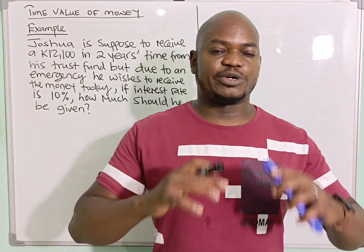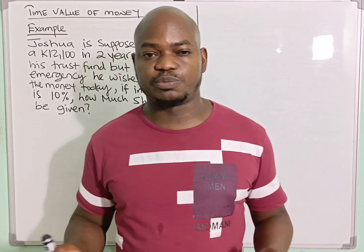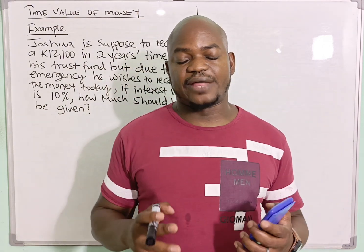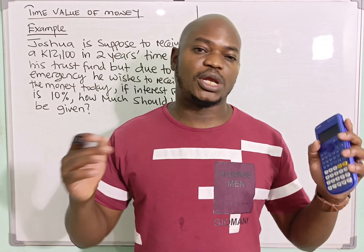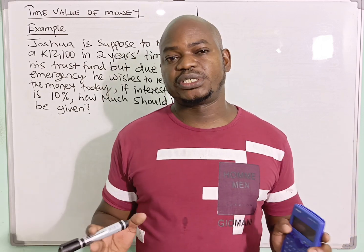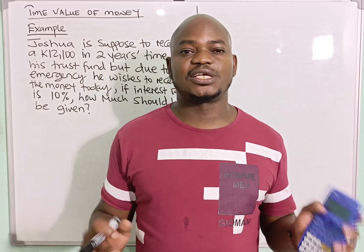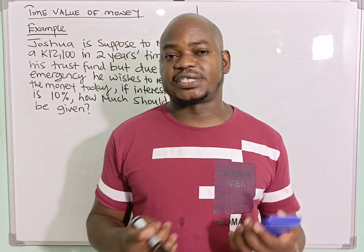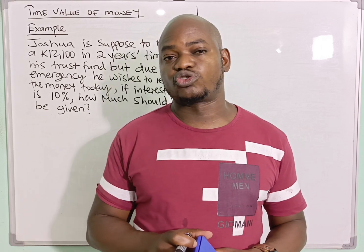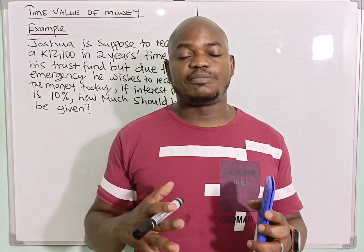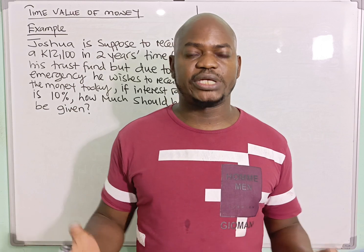Why is it so? It's because of these three major factors. Number one, the aspect of inflation. If I'm given $10,000 today, I can do more with that amount than in two years' time, because the prices of goods and services will have gone up. The other factor is that of risk — there are so many unforeseen circumstances that can happen between now and probably two years' time, so I would rather have the money today.